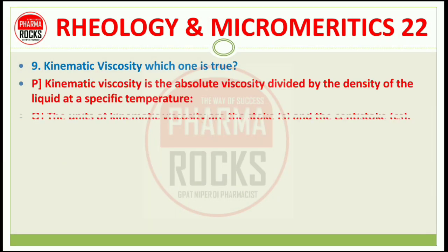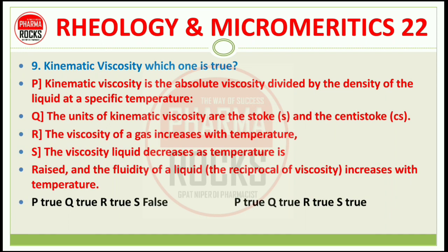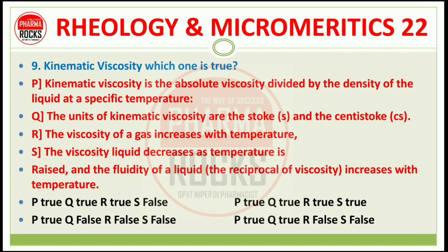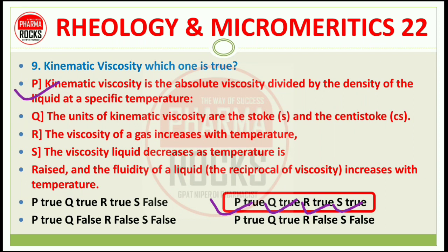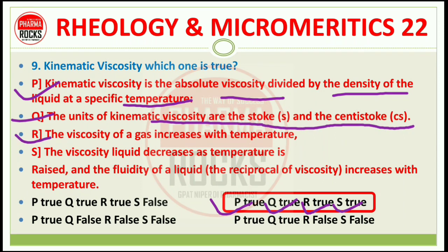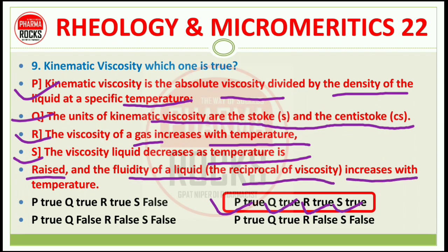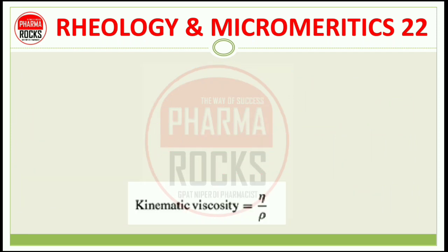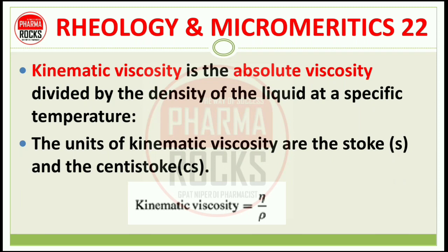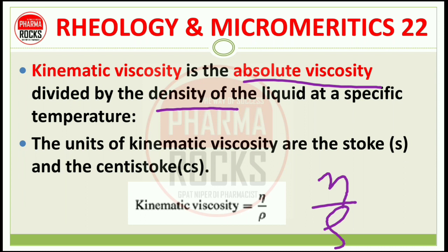Question number 9: Kinematic viscosity — which statements are true? The right answer is option B — all four statements P, Q, R, S are true. Kinematic viscosity is absolute viscosity divided by the density of the liquid at a specific temperature — η/ρ. The unit of kinematic viscosity is Stoke or centistoke. Viscosity of gas increases with increase in temperature. Viscosity of liquid decreases as temperature increases. Fluidity of liquid — the reciprocal of viscosity — increases with temperature. All four statements are correct.